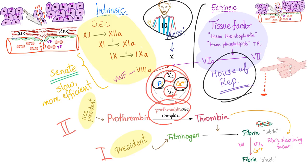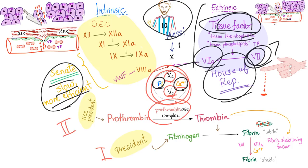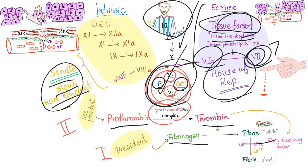We have the extrinsic pathway, which is faster — like the House of Representatives. Then there is the more elegant and wiser senate, which takes time — very slow but more efficient. The extrinsic pathway is activated by the tissue factor. When the tissue factor comes in contact with the blood, it's evidence of trauma. So we have tissue thromboplastin, which is the same thing as tissue factor, activating factor 7 into its active form, which will activate factor 10 into its active form. The committee agrees on coagulation: prothrombin → thrombin → fibrinogen → fibrin.